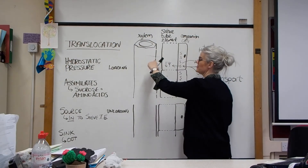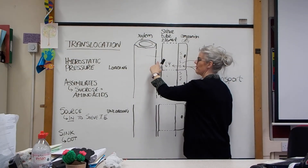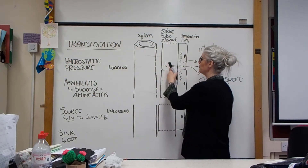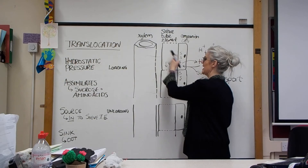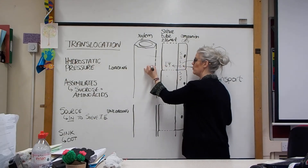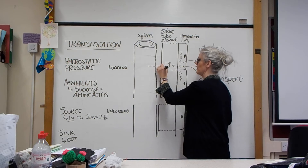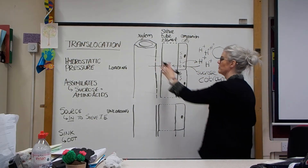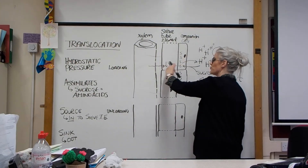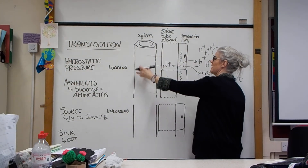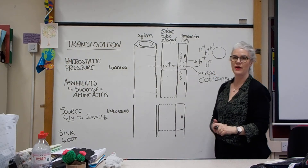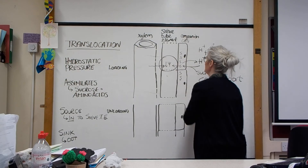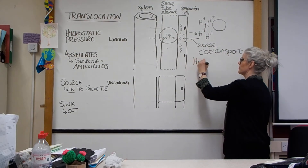The sieve tube elements run alongside xylem, which has pits allowing lateral movement of water. Because we've reduced the water potential in the sieve tube elements by moving sucrose in, water leaves the xylem to equalise the water potential gradient. Water moves out of the xylem into the sieve tube element area, and this increases the hydrostatic pressure in that region.